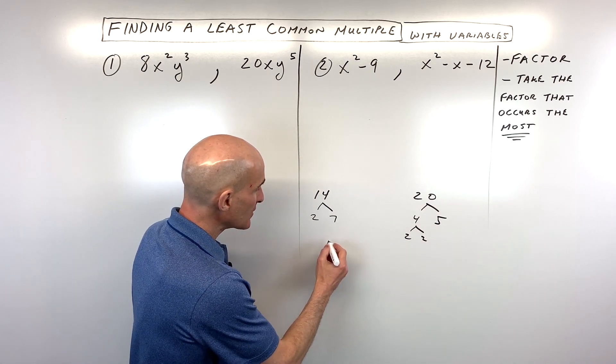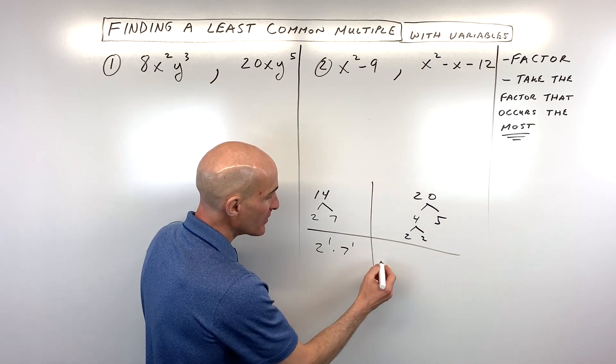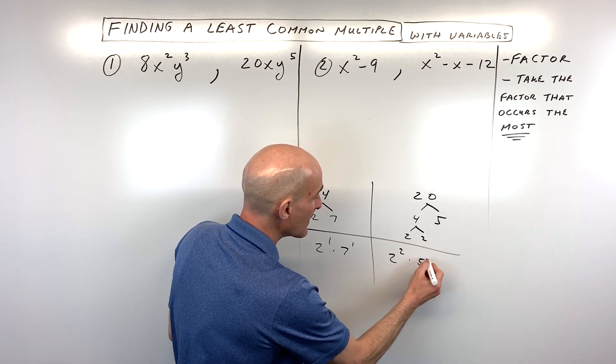Then what I like to do is write it in prime factorization notation. So we've got 1 two, 1 seven, two 2s times 1 five.